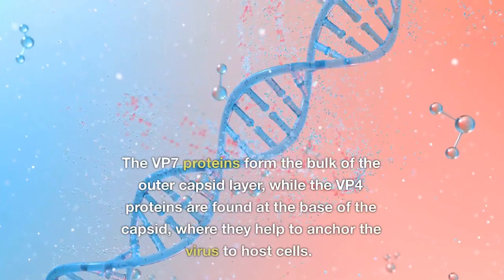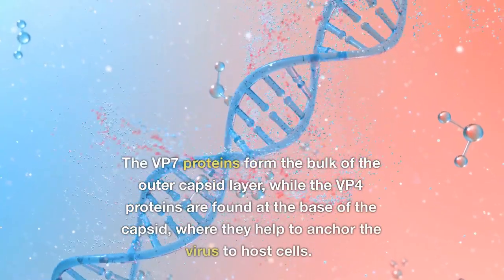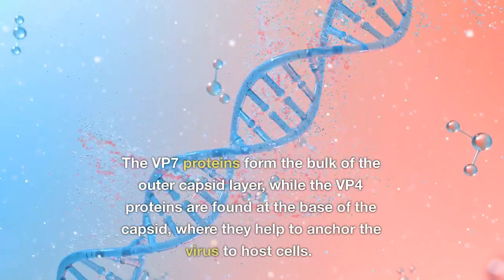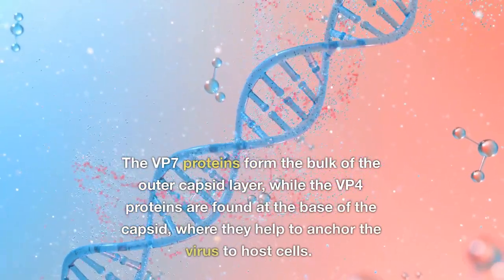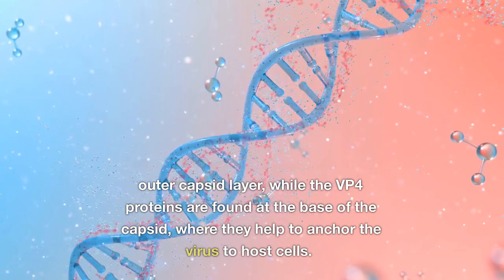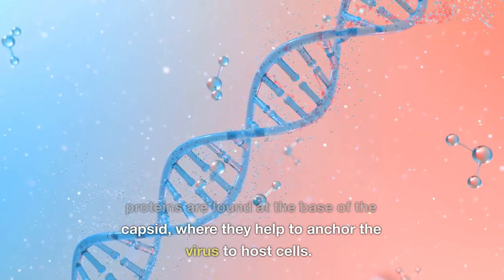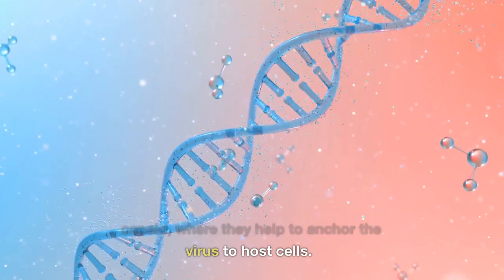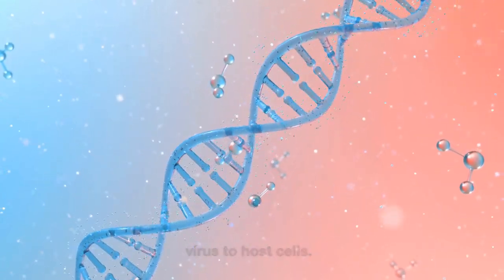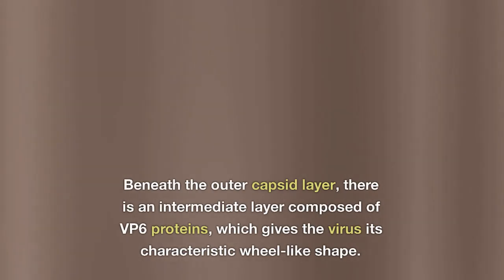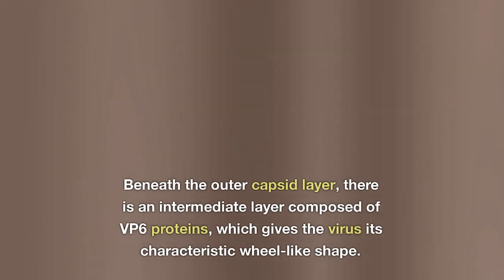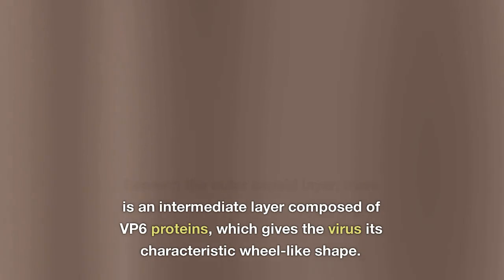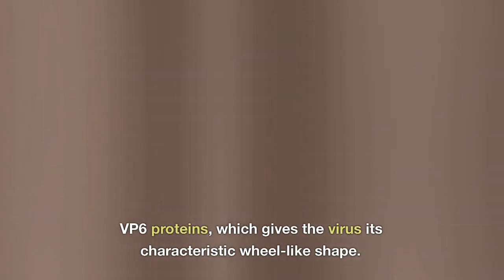The VP7 proteins form the bulk of the outer capsid layer, while the VP4 proteins are found at the base of the capsid, where they help to anchor the virus to host cells. Beneath the outer capsid layer, there is an intermediate layer composed of VP6 proteins, which gives the virus its characteristic wheel-like shape.